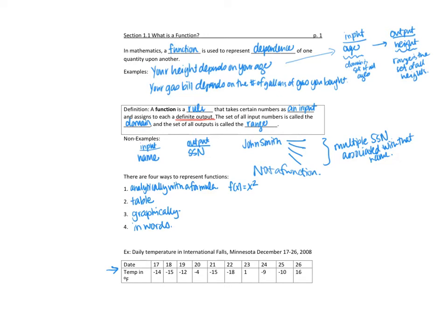Let's look at the example that gives the daily temperature between December 17th and December 26th, 2008. There might be a typo here — what we really want is a specific output for each date. In a day, the temperature could fluctuate, but if we say the daily low temperature, then that's a definite number. So for each date we have a definite output: we input the date and get out the low temperature in degrees Fahrenheit.